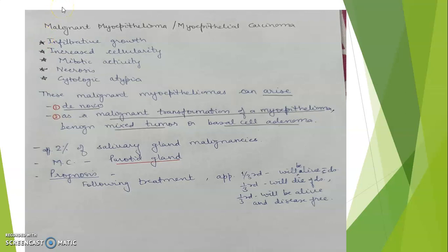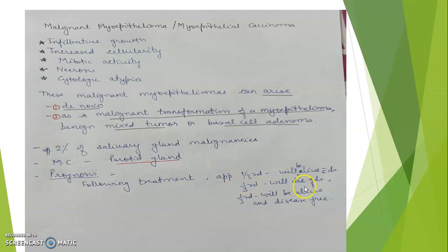Malignant myoepitheliomas contribute approximately 2% of salivary gland malignancies, and the parotid gland is most commonly involved. Regarding prognosis following treatment, approximately one-third of patients will die of disease, one-third will be alive with disease, and one-third will be alive and disease-free. Thank you very much.